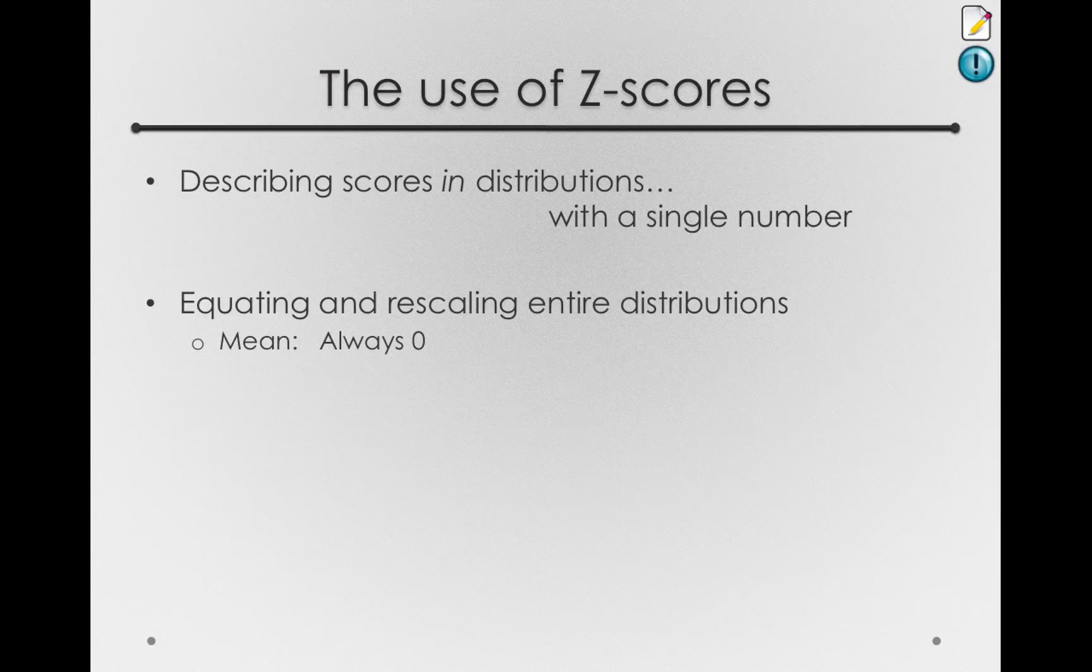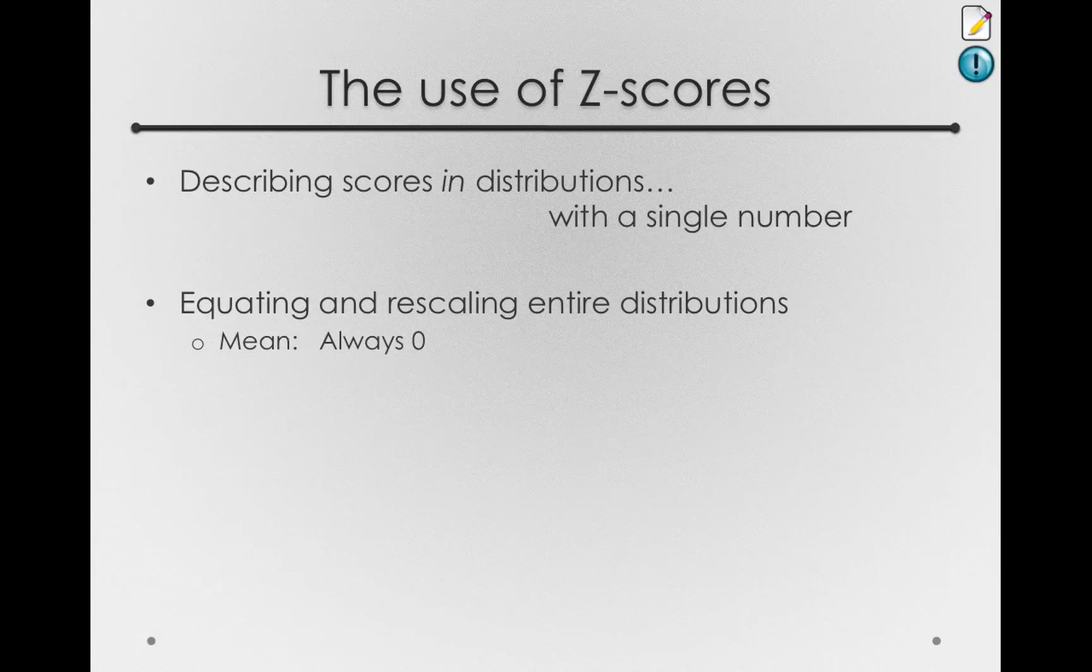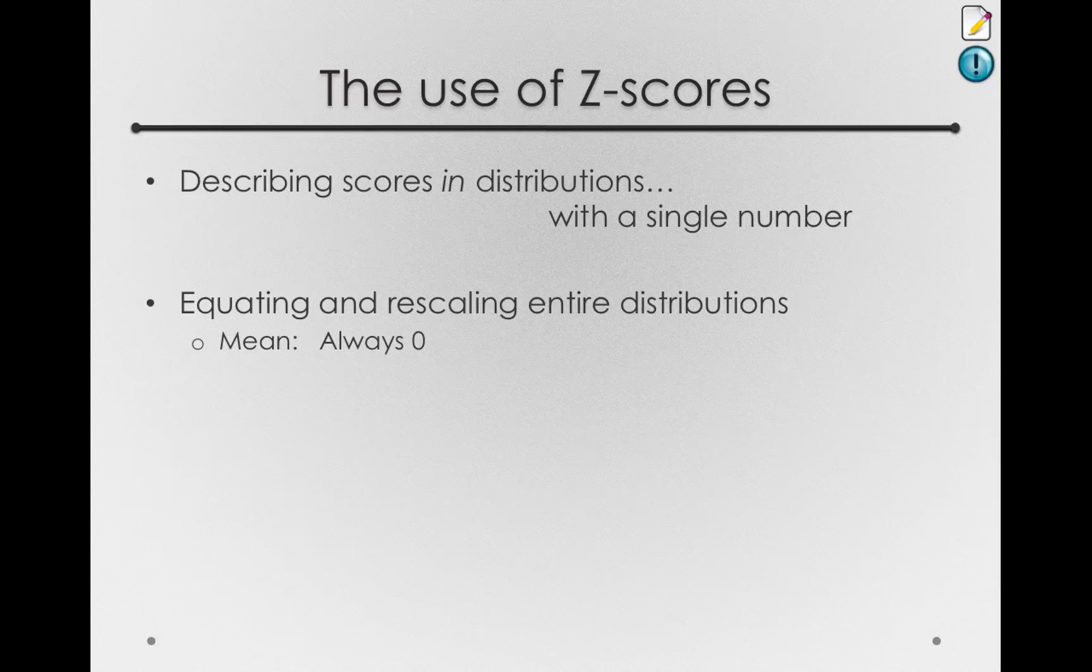Your deviation has to be 0 if you had the score right at the mean, and so in any distribution, if you score at the mean, your z-score is 0. Consequently, the mean of any entire distribution that has been z-scored will have a mean of 0.